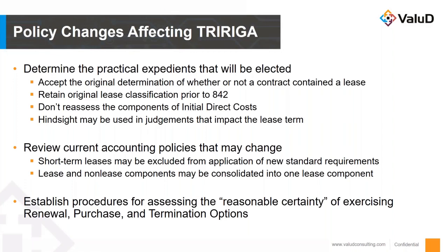First, we would look at the practical expedients that are allowed under Topic 842 that a client, or you as an organization, may elect as a package. The first practical expedient is related to accepting the original determination of whether or not a contract contains a lease. The importance of making this decision is it will help from the onset of determining what lease records you will need to create in Trieria.